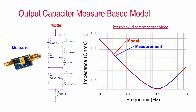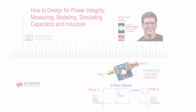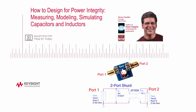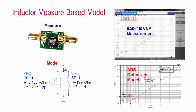The model would not be complete without the output filter, and here again we need a good model of the components. If you don't know how to obtain the output capacitor measurement-based model, the two-port shunt-through measurement technique is shown in the previous video on designing for power integrity — measuring, modeling, and simulating capacitors and inductors. The output inductor is much less critical in the model, but can also be measured using the two-port shunt-through method. Just like the capacitor, a measurement-based model of the inductor is created using the ADS optimizer.